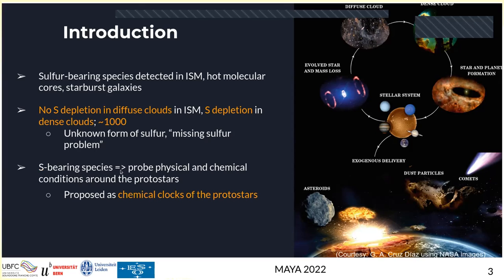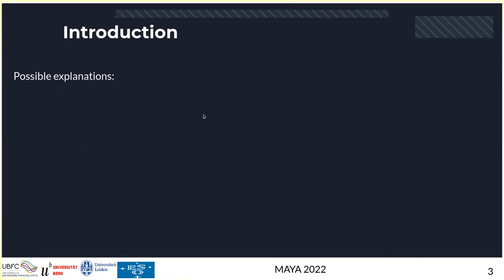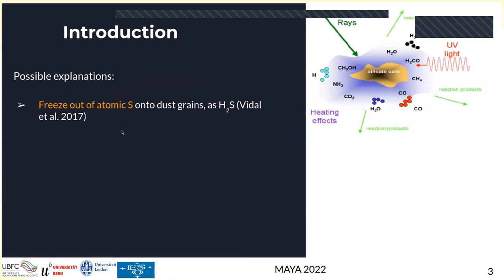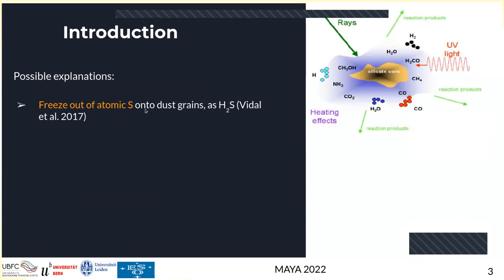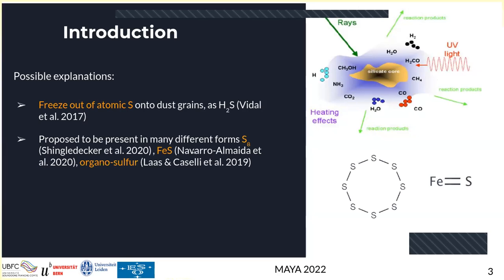We can use sulfur bearing species to study physical and chemical conditions around protostars, and they have been proposed in the literature as chemical clocks of protostars. From past studies, we believe sulfur is mainly present on dust grains as H2S ice. A dust grain is essentially an ice mantle — in cold, dense environments when the temperature is very low, chemical species stick to the dust grain and freeze out, forming ices. This ice formation is affected by many physical and chemical processes.